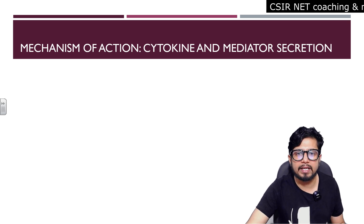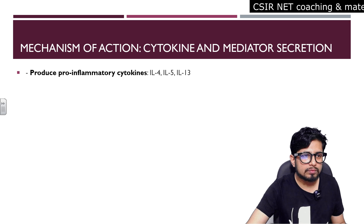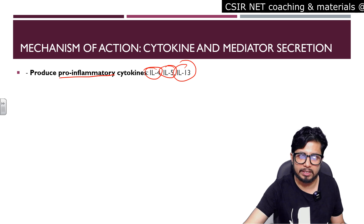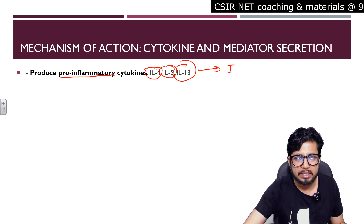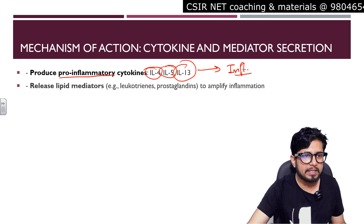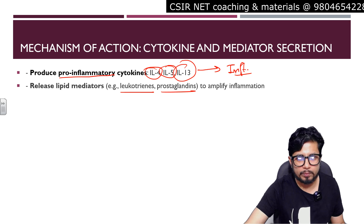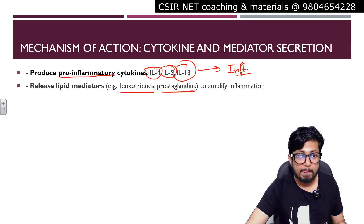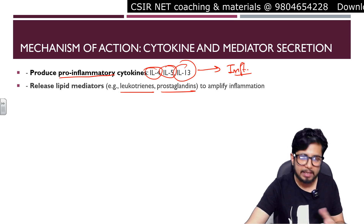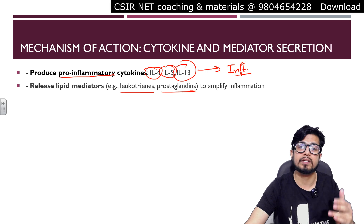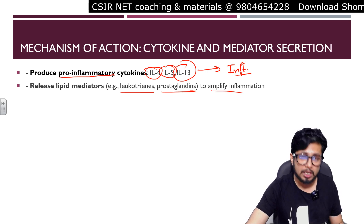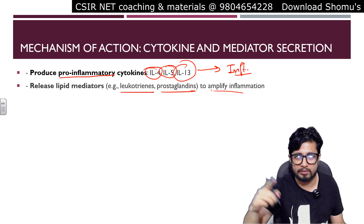The second mechanism is cytokine and mediator secretion. Eosinophils secrete pro-inflammatory cytokines like IL-4, IL-5, and IL-13, all of which can cause inflammation. They also release lipid mediators like leukotrienes and prostaglandins, which can cause anaphylactic reactions and amplify the inflammatory response. Eosinophils therefore have a significant role in inflammatory responses.